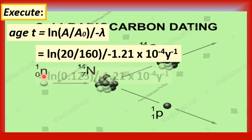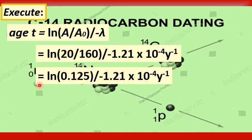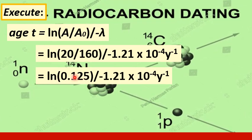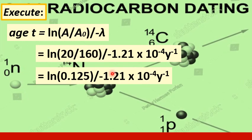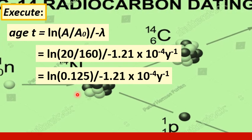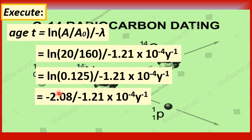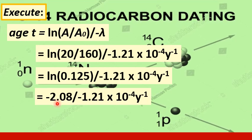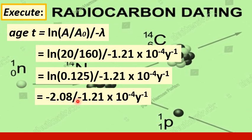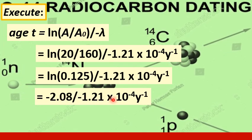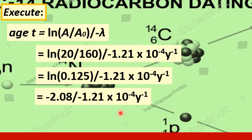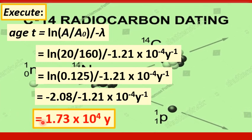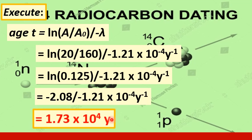So doing your math we will get the value of t equals the natural log of 0.125, that is the result of dividing 20 by 160, and then divide by negative lambda. Finally, the natural log of 0.125 is equal to -2.08. If that is divided by -1.21 × 10⁻⁴ per year, we arrive at the value of t equal to 1.73 × 10⁴ years.